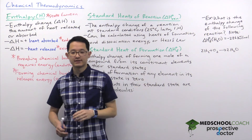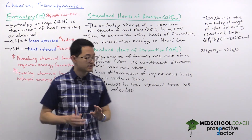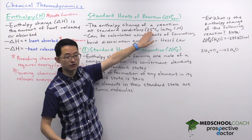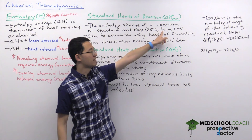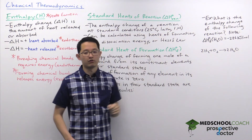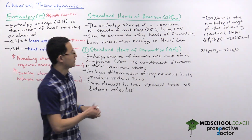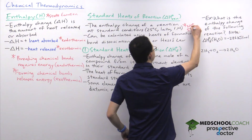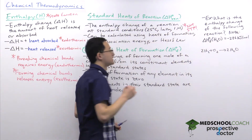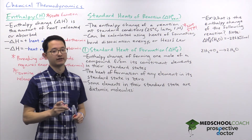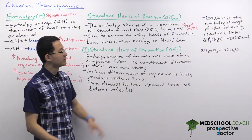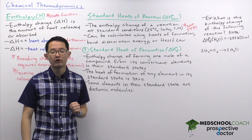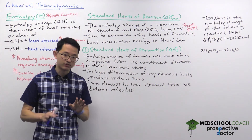Standard conditions refers to 25 degrees Celsius or 298 Kelvin, one atmosphere of pressure, and one molar concentrations. It's important to note that this is not STP. Standard temperature and pressure is different from standard conditions — at STP we're at zero degrees Celsius or 273 Kelvin and one atmosphere of pressure. So these two are different.